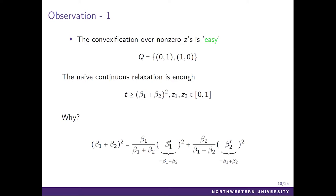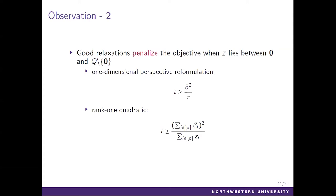The second observation is that the convex hull relaxation penalizes the objective function when z_i is fractional — meaning it lies between zero and the non-zero indicator boundary. For the one-dimensional static relaxation, we divide the quadratic function by z, which is fractional. When z is fractional, we kind of penalize the quadratic function. For the rank-one quadratic convex hull description, we also divide by the square of the sum of z_i. We can see that if z_i is less than one, we also penalize the convex hull term.